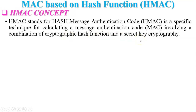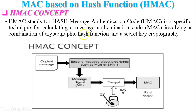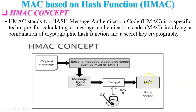This is the basic block diagram of the HMAC concept. The original message is taken, then MD5 or SHA-1 — one of the hash function algorithms — is applied to calculate a hash value. The hash value is then encrypted using the key K to generate the final output MAC. In the HMAC concept, we achieve both integrity as well as authentication.